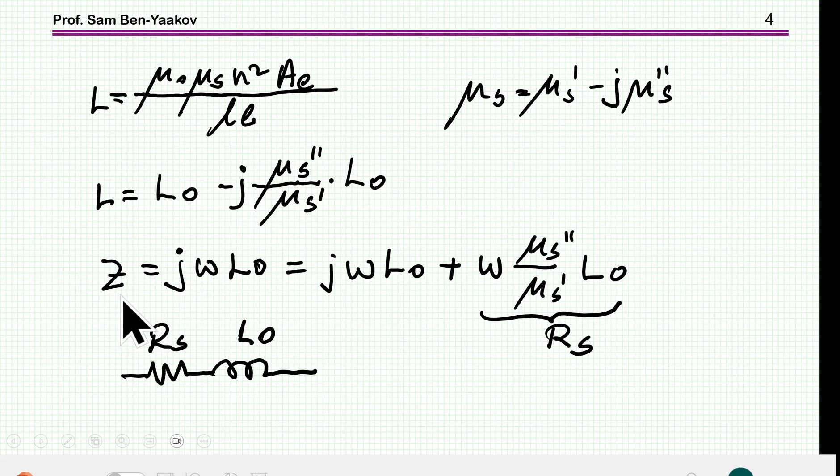Now, for the impedance, we are multiplying the inductance by jω in the phasor calculation or presentation. Once you multiply it by jω, and then you have here a complex number, then this part actually becomes a real number. While here, we are left with the conventional jωL, which is the impedance of a pure inductor. This means that this model leads to this equivalent circuit of an inductor plus losses.